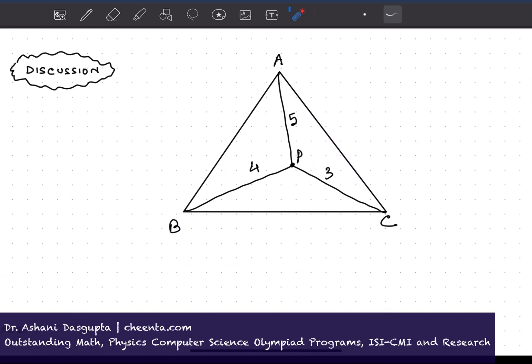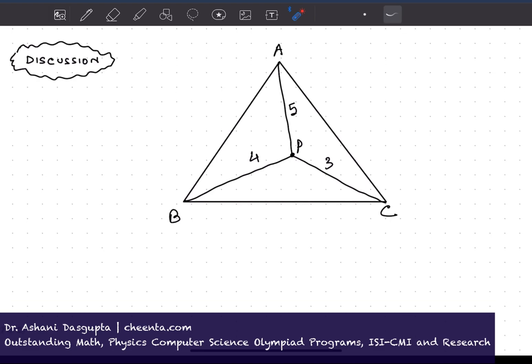So let's start the discussion. I'll remind you ABC is an equilateral triangle. P is a point inside such that PA is 5, PB is 4, and PC is 3. We want to find the perimeter of this equilateral triangle.